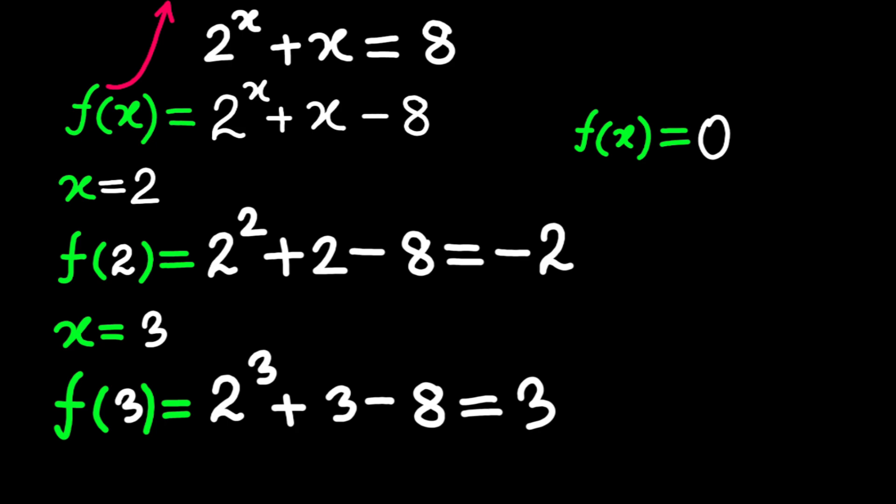Since f of x is continuous, 2 to the power x is smooth, x is smooth, no breaks or jumps, and it goes from negative 2 at x equals 2 to positive 3 at x equals 3, it has to hit zero somewhere in between. And because f of x is strictly increasing, it can only hit zero once. Boom! We've just proved there's exactly one real root, and it's somewhere between 2 and 3. That's our first big win!